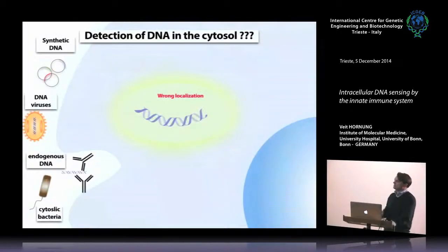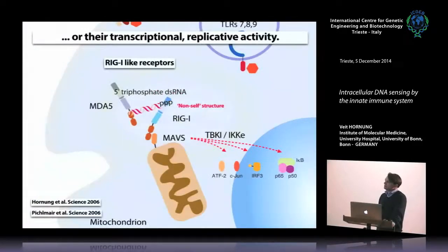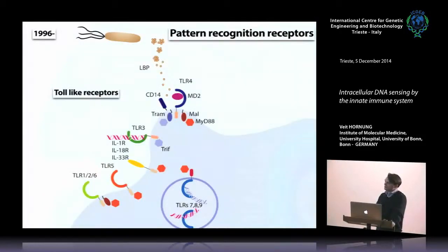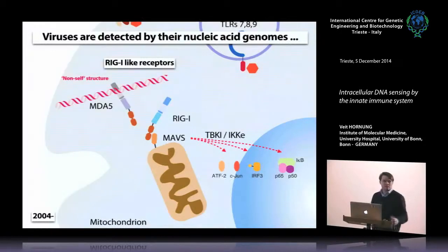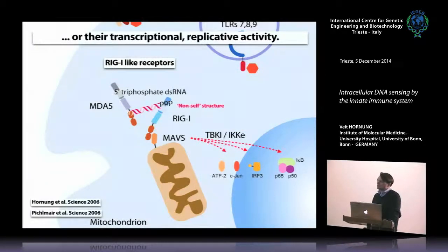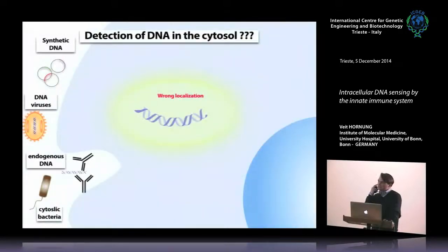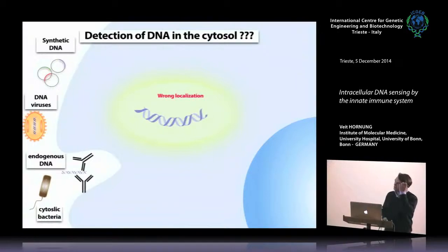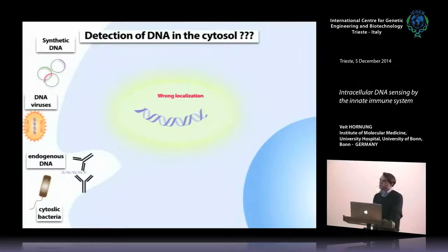A long-neglected field, rediscovered in the 2000s, is how DNA is actually sensed in the cytoplasm. TLR9 senses DNA in endolysosomes but is restricted to certain cell types in humans — plasmacytoid dendritic cells and B cells — and TLR9-knockout mice could still respond to DNA. A classic example is that transfecting plasmid DNA into cells triggers antiviral immunity just due to DNA in the cytoplasm, as do DNA viruses and bacteria replicating in the cytoplasm. So what is the mechanism behind cytosolic DNA sensing?